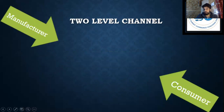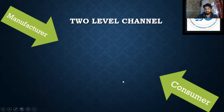The second type is two level channel. As the name itself depicts, between the manufacturer and consumer there are two intermediaries.